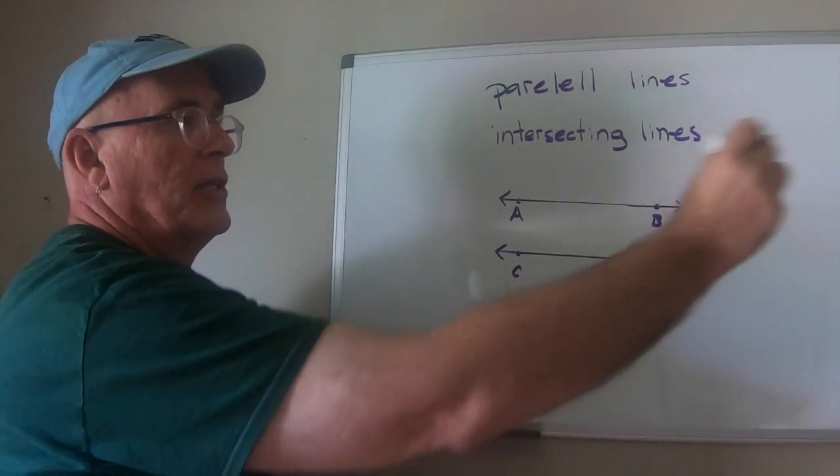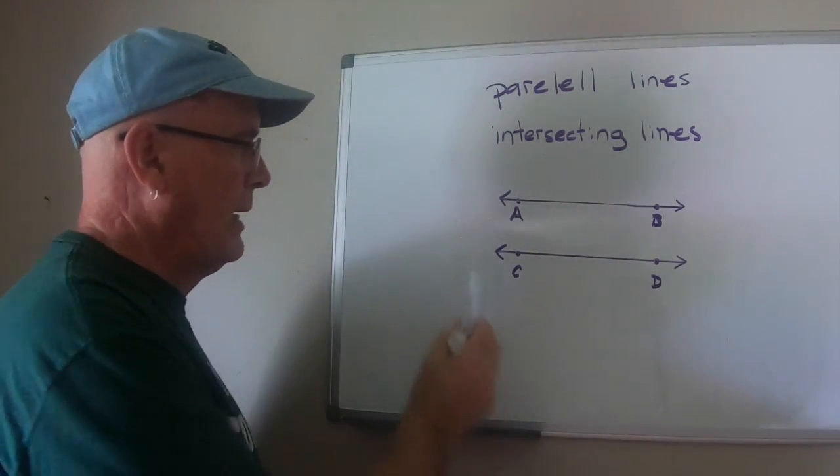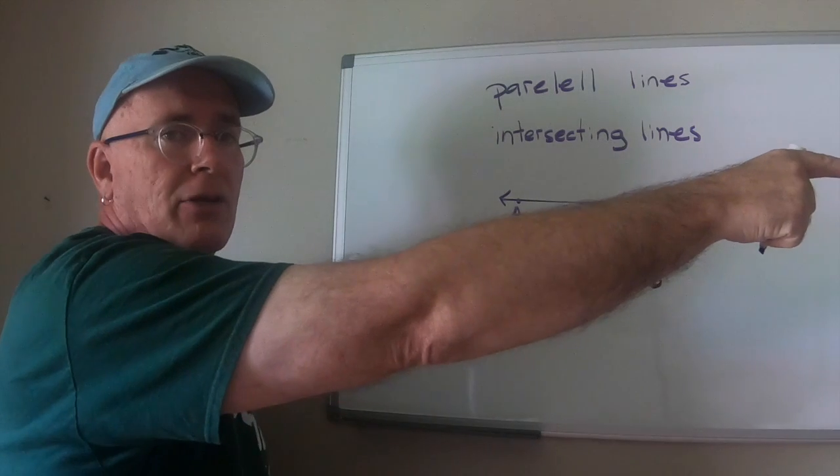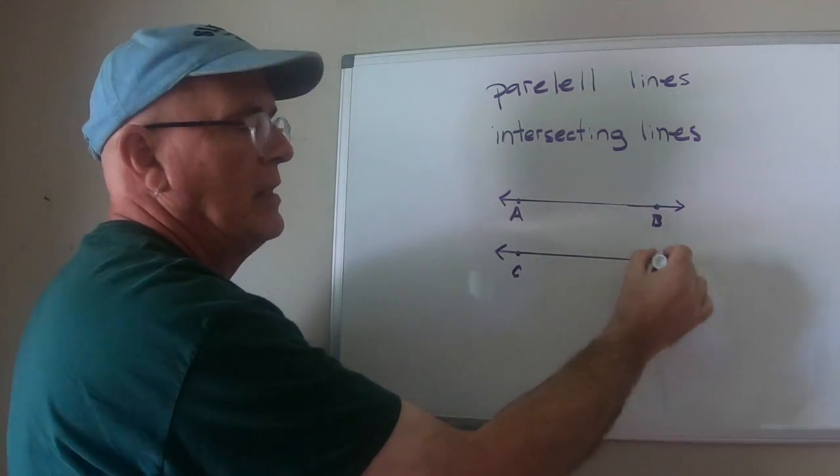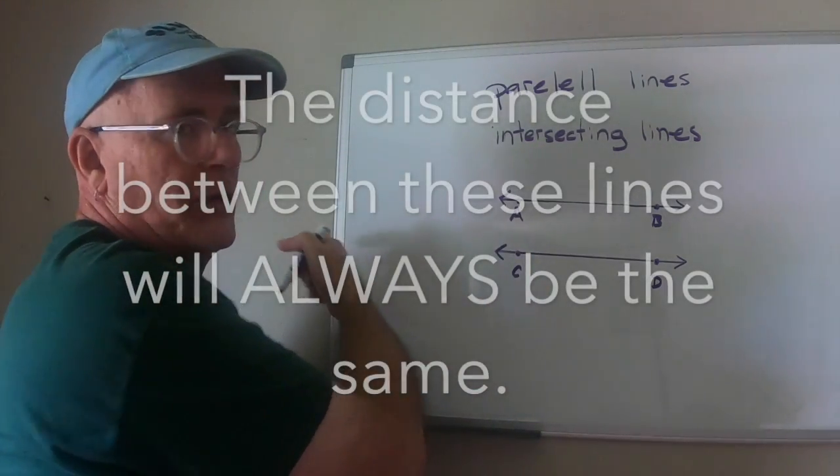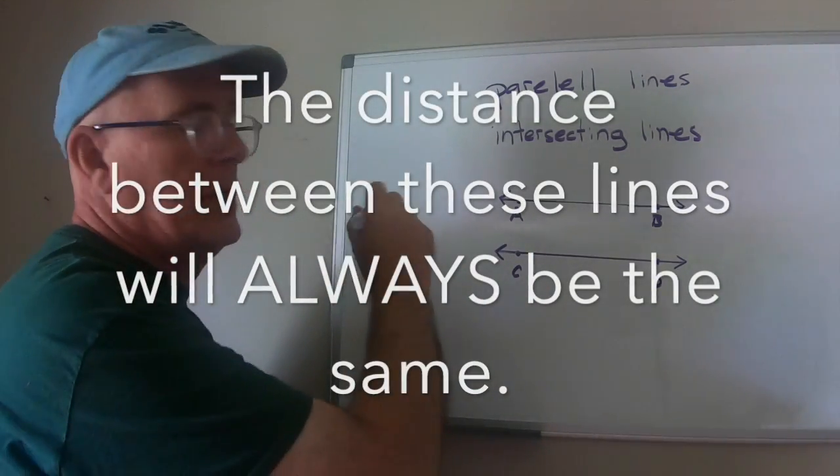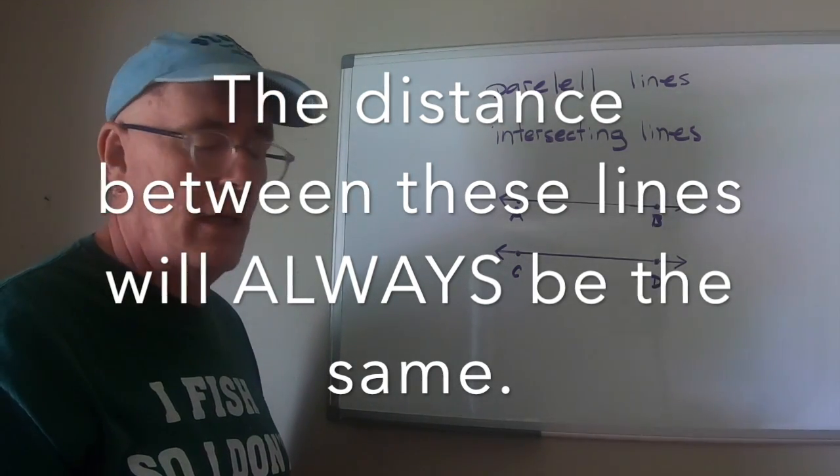If these lines extend forever, which they do because they're lines, they have no ending, no beginning, no ending. I could go in that direction for a thousand miles and the distance between these lines will still be exactly three inches. I could go in that direction for a thousand miles and the distance between those two lines is going to be three inches.